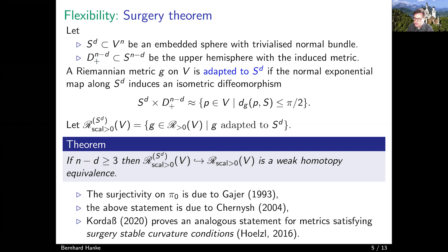This formulation is due to Gajer from 1993, and the full statement that this is a weak homotopy equivalence is a paper by Chernysh in 2004. There are also analogous statements for other so-called surgery-stable curvature conditions, which I will not discuss right now.